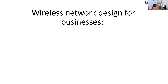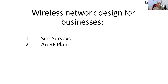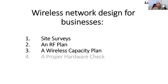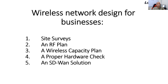The parts of a wireless network design — for a business or even your home — come down to five things. Number one: site surveys. Number two: an RF plan. Number three: a wireless capacity plan. Number four: proper hardware check. And number five: an SD-WAN solution. After you've addressed all of these, that becomes your project scope and you can begin building your wireless network.